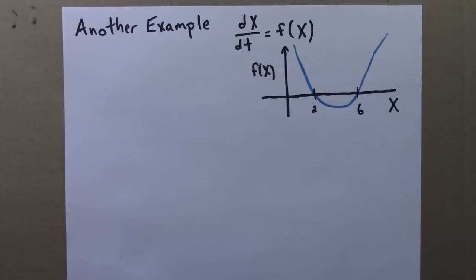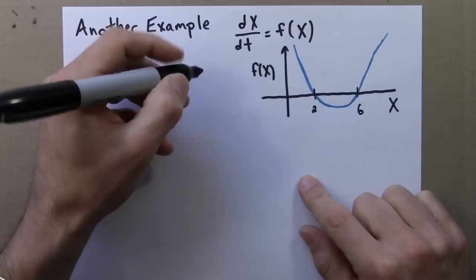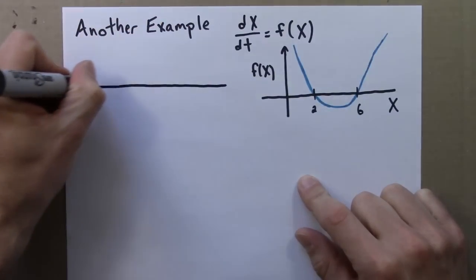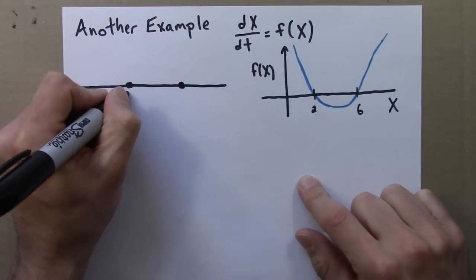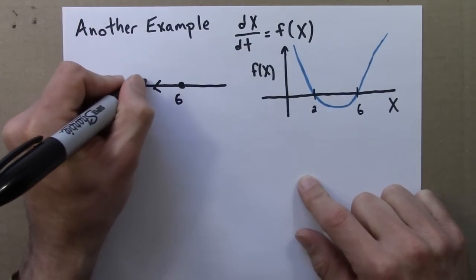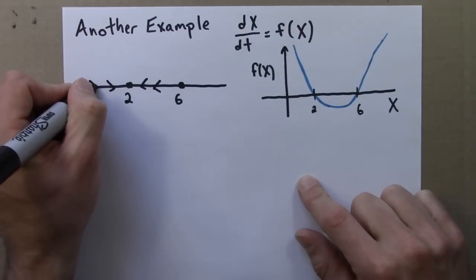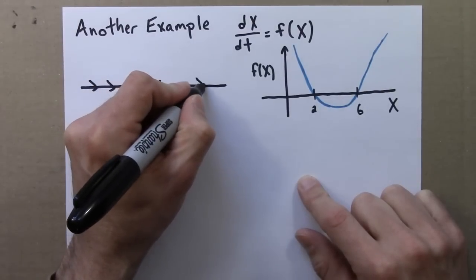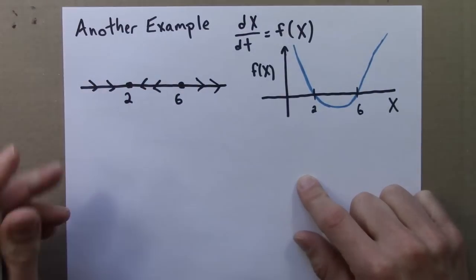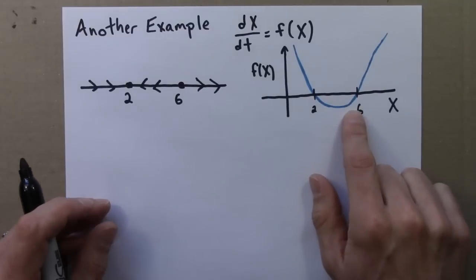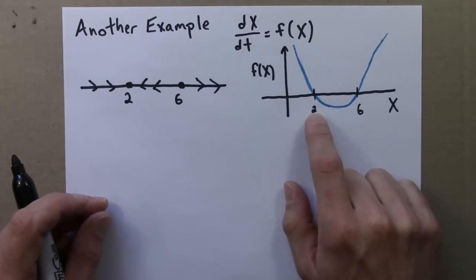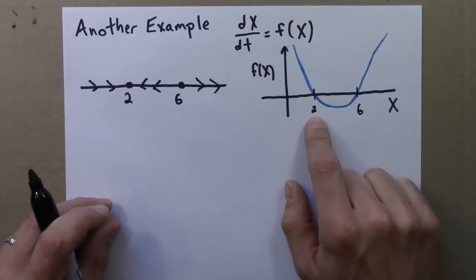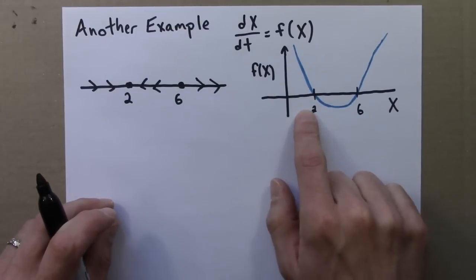Right away, we can draw a phase line for this differential equation. There are two equilibria, or fixed points, at 2 and 6. For a differential equation, we have an equilibrium when the derivative is 0, because when the derivative is 0, the function is not changing. That happens at 2 and 6.